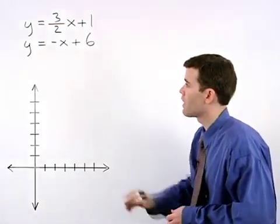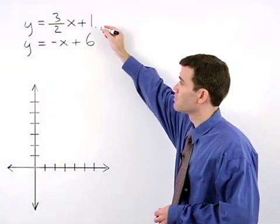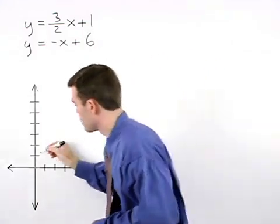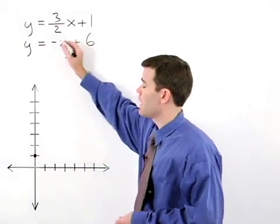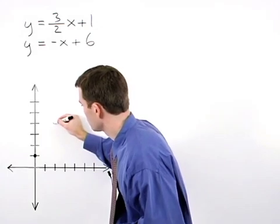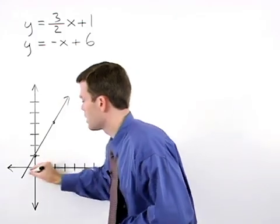So let's start by graphing the line y equals 3 halves x plus 1. It has a y intercept of 1, and its slope is 3 halves. So we go up 3 and over 2, and we have our first line.